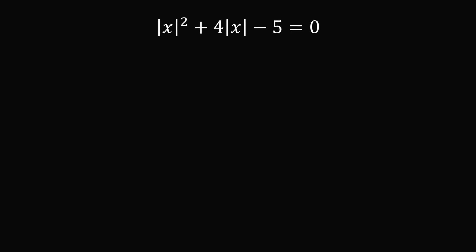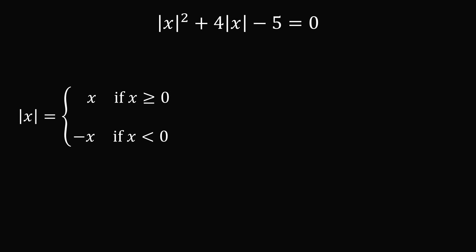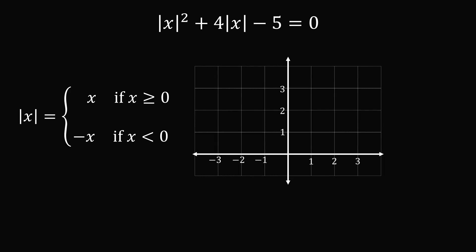Recall the definition of the absolute value of x. It is equal to x if x is greater than or equal to 0, and it is equal to negative x if x is less than 0. Here's a graph of this piecewise defined function, y is equal to the absolute value of x. If x is greater than or equal to 0, we have the graph of y equals x, and if x is less than 0, we have the graph of y equals negative x, so we have this v-shaped graph.